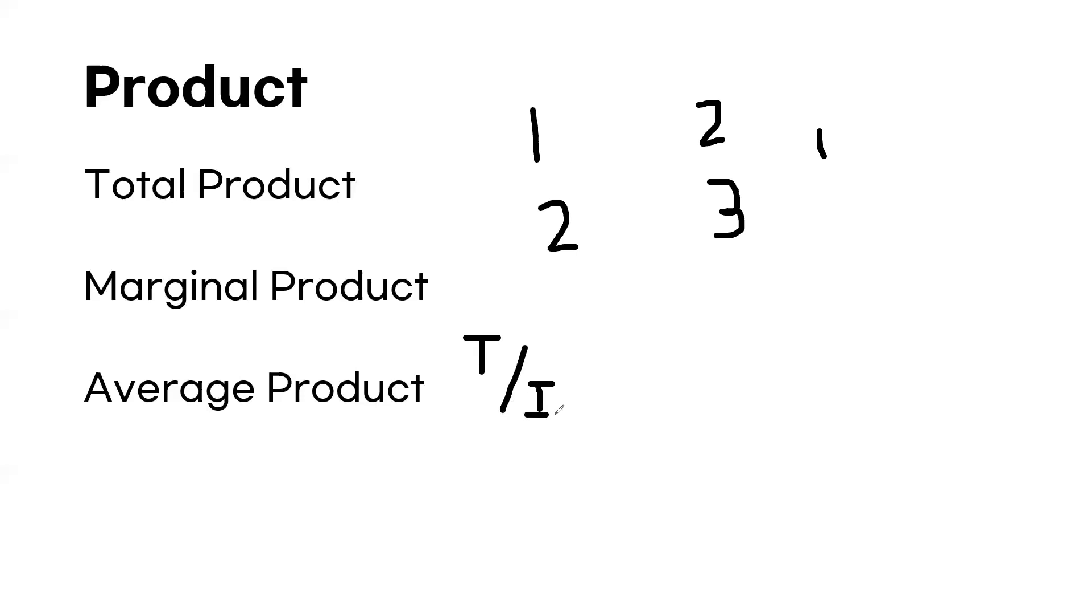Average product is basically total product divided by input. We usually describe input as the same as labor, so labor cannot fit in. So, the average product of one unit of input is going to be two, while the average product of two inputs is going to be three over two, in the ice cream case that we talked about before.